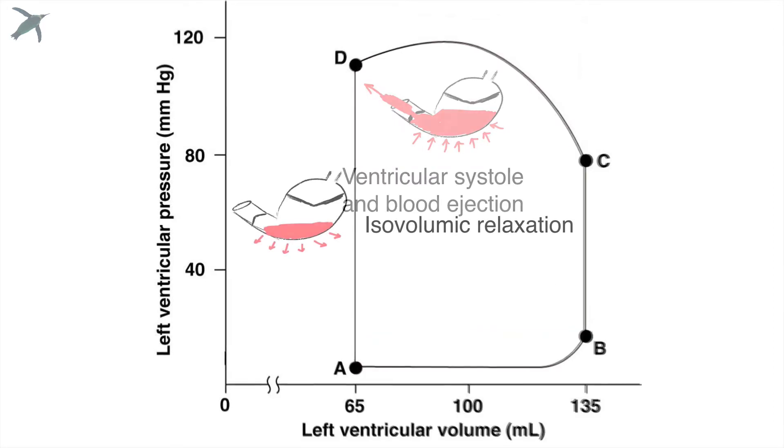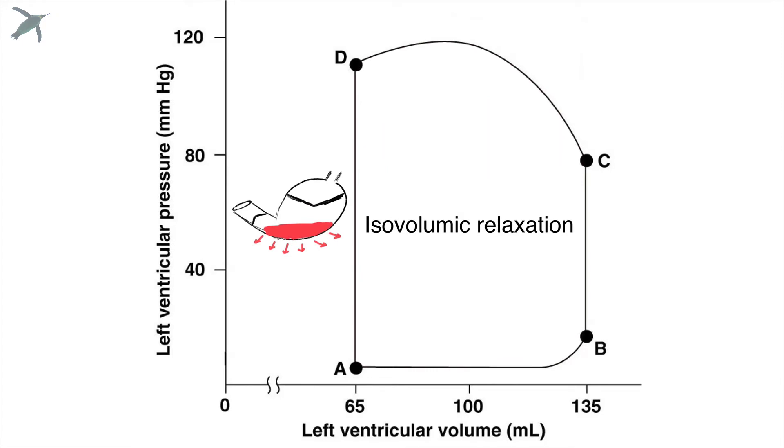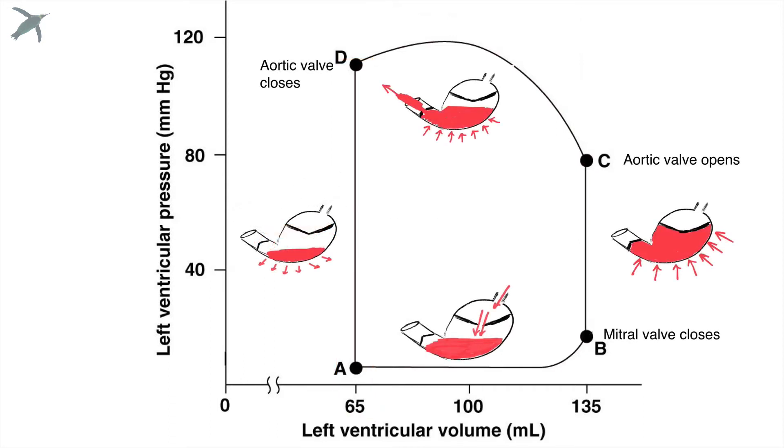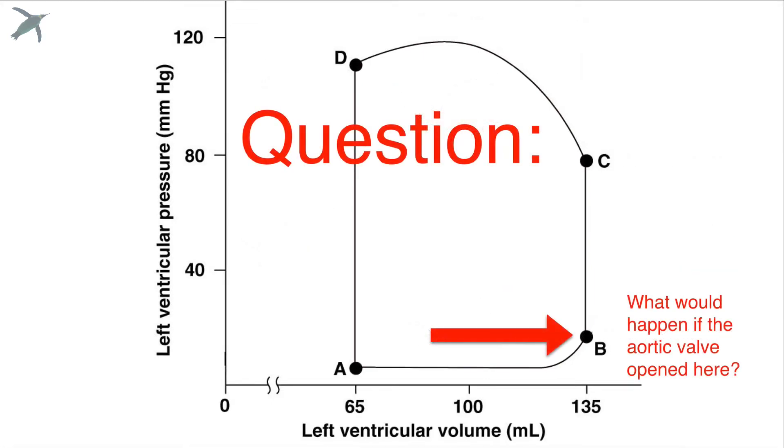From D to A, we've got to relax. So the ventricle relaxes, and the volume does not change. So we call this isovolumic relaxation. So now you've got your four basic stages and the four basic parts of this pressure-volume loop. Not too bad.